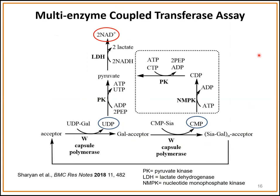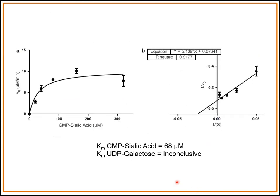In terms of ease of use, this assay provided results, but it was a very cumbersome assay at times. We were able to get good, reliable kinetic results for Michaelis-Menten-type kinetics for CMP-sialic acid. However, our results with UDP-galactose were inconclusive. So we decided to move on and try to find an easier and more reliable assay.